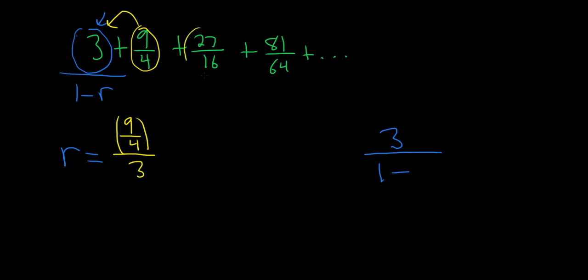You could also take this one, 27 over 16, and divide it by 9 over 4. It's the same thing. Take any term and divide by the one right before it.